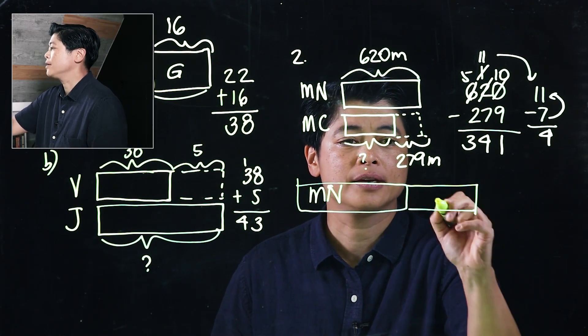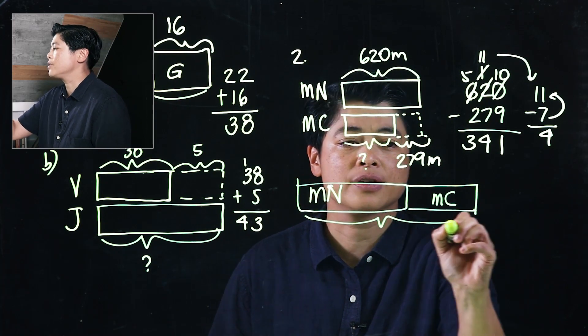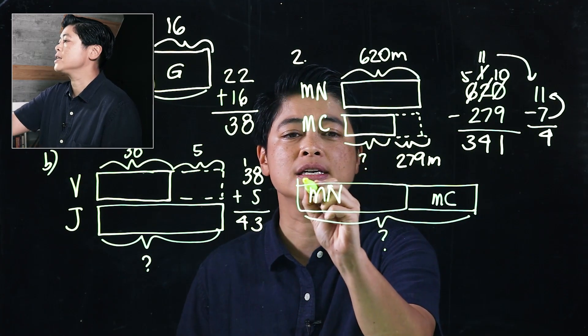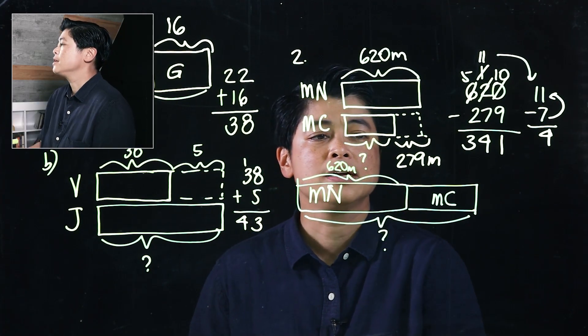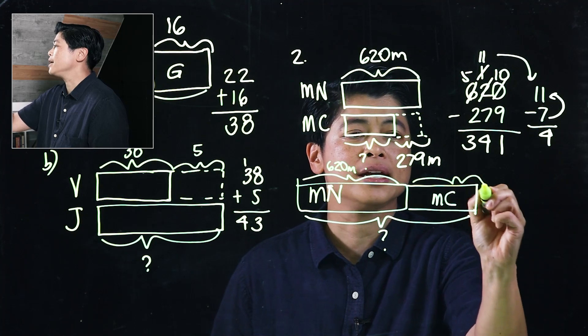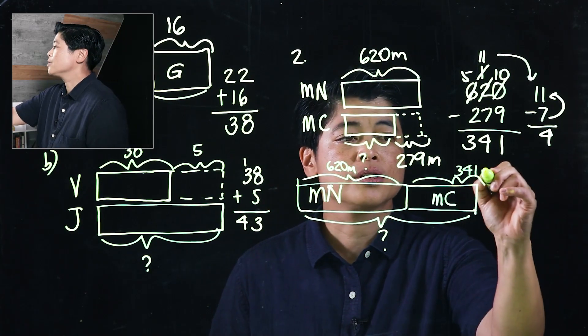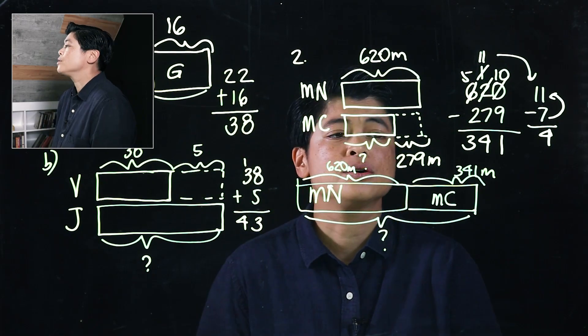So Mr. Nang we know is 620 meters. Mr. Chang we know is 341 meters. So the question is together, how much do they have?